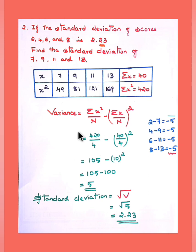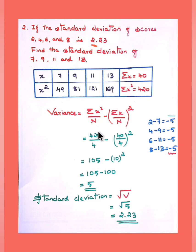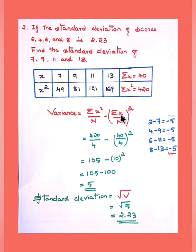Let us verify: for 7, 9, 11, 13, sigma x equals 40, sigma x-squared gives the corresponding value. Substituting into the formula: 420 divided by 4, minus (40 divided by 4) whole squared, gives 105 minus 100 equals 5. Square root of 5 equals 2.23 — which is equal to the previously given standard deviation value. So the answer is confirmed as 2.23.